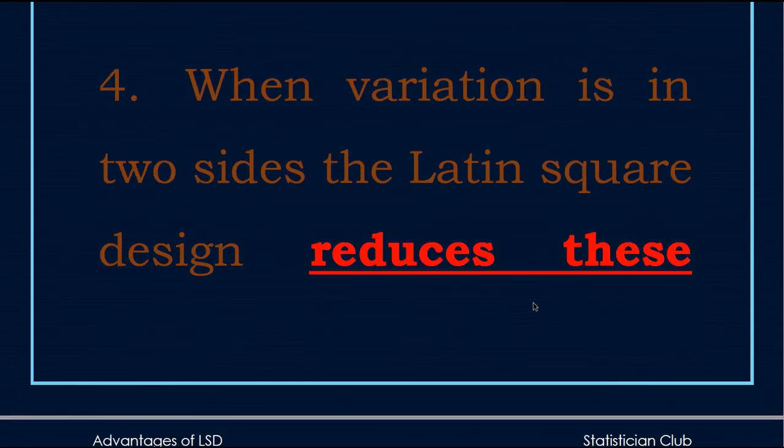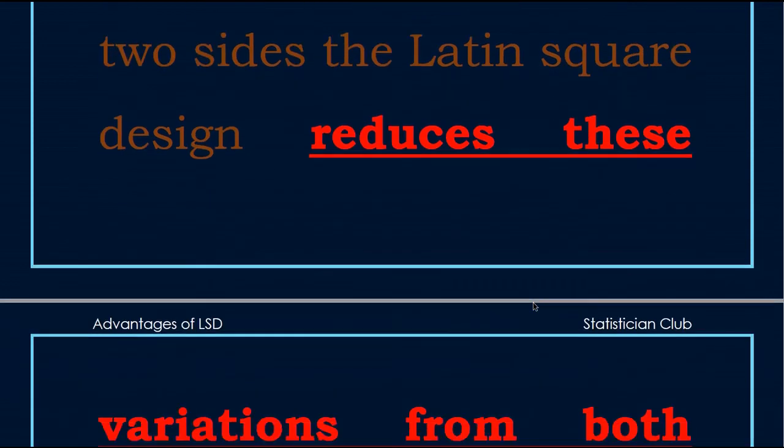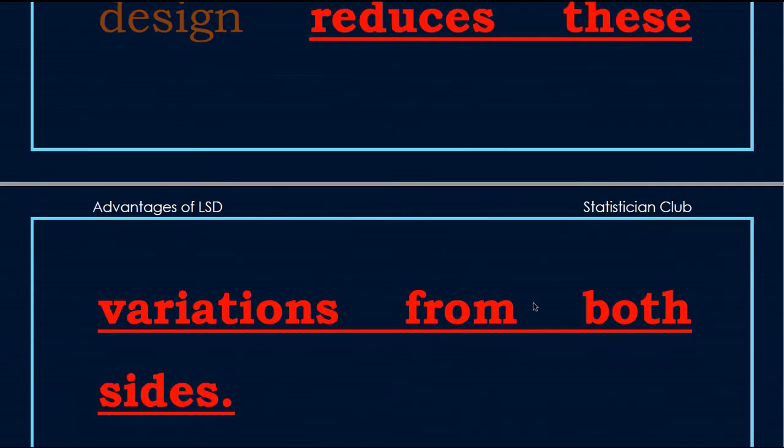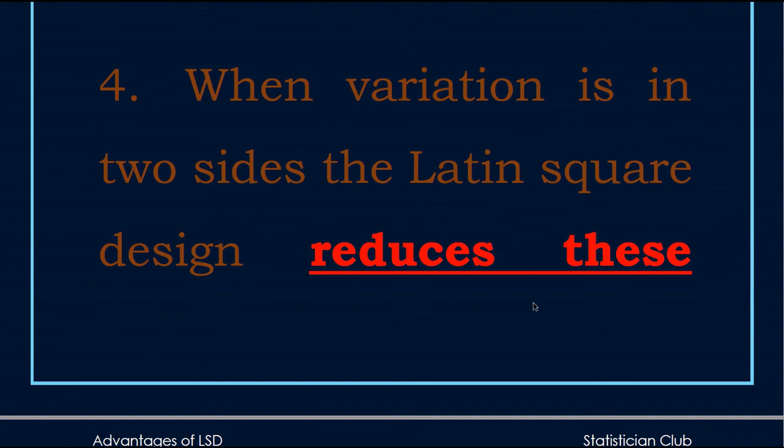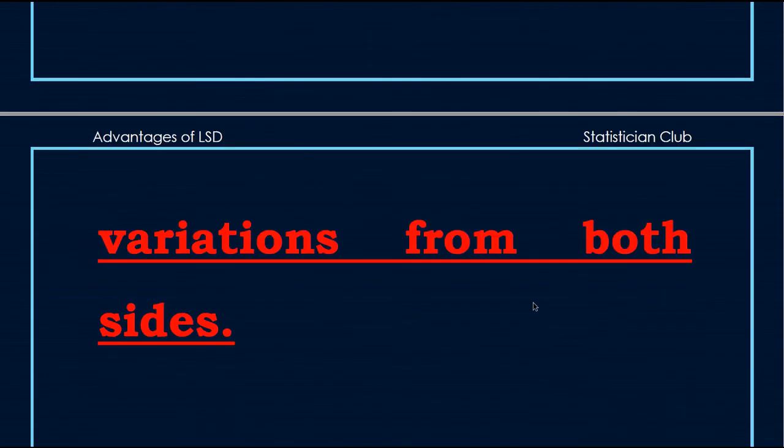Fourth, when variation is in two sides, the Latin square design reduces these variations from both sides. Because we introduce randomization in Latin square design row-wise and column-wise, so it can reduce these variations from both sides.